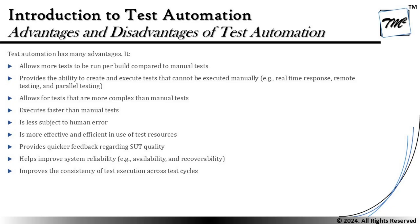Now we list the key advantages of test automation. First, it allows more tests to be run compared to manual tests, and provides the ability to create and execute tests that cannot be executed manually. When it comes to repeatability — for example, regression testing — that is where automation is very helpful. We need to understand the scope and the return on investment we are going to have by investing effort in automation.